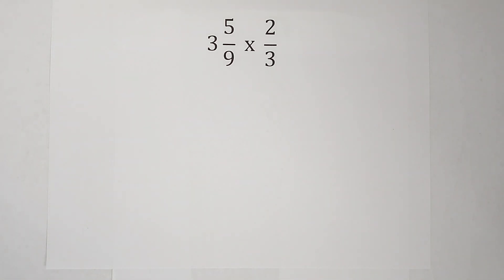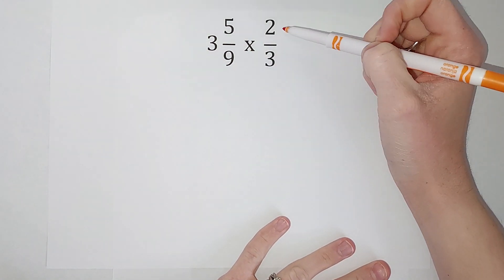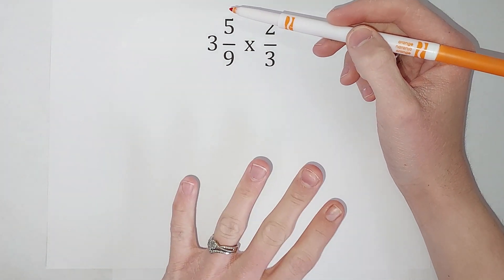Hey guys, we are going to multiply a mixed number by a fraction. First of all, before I multiply these, I'm actually going to change my mixed number into an improper fraction.